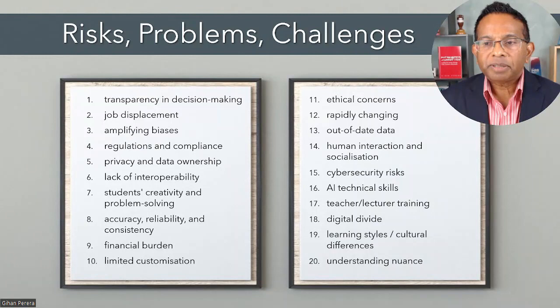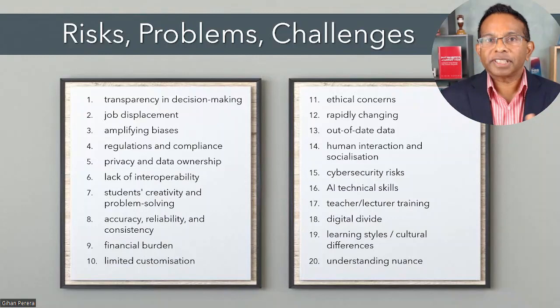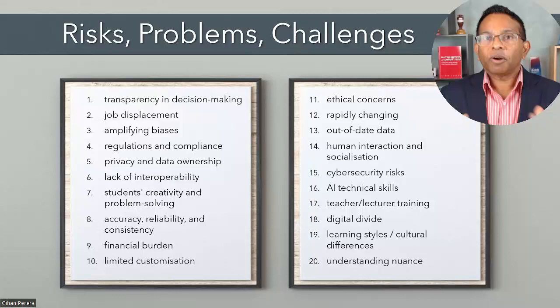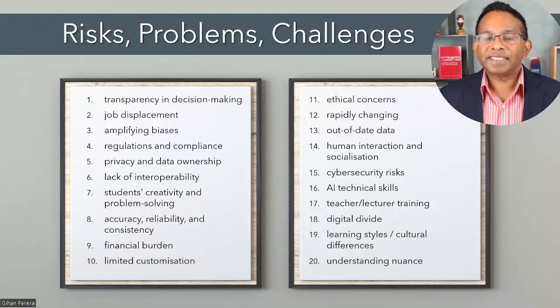If you want me to explain any of them — like number seven, what does AI mean for creativity? Number nine is about the cost of it. Number ten is what if AI just turns out the same thing over and over, not very customized. Number thirteen is out-of-date data — the free version of ChatGPT has a database that stops at September 2021, so some data is out of date. Number sixteen: AI technical skills — will we all need to learn how to use AI more effectively? Do we need to invest in training teachers and lecturers? And number eighteen: is it going to increase the digital divide between those who have access to AI and those who don't?